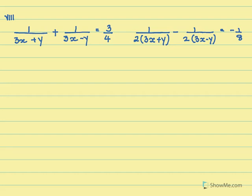This is the next one. It seems like a rather long sum, so we go ahead with the same method first. We separate the coefficient from the variable. Here the coefficient is 1, and the variable is 3x plus y.